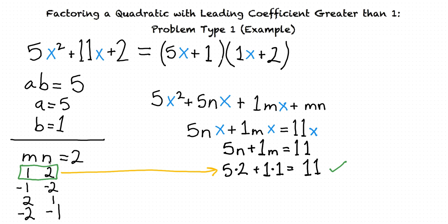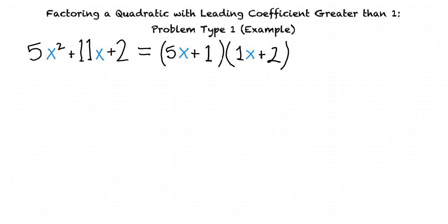Now that we've found a=5, b=1, m=1, n=2, we can write our factored answer: 5x² + 11x + 2 = (5x + 1)(x + 2). We can verify this by multiplying using FOIL to check it matches our original expression.